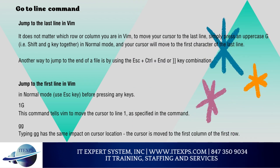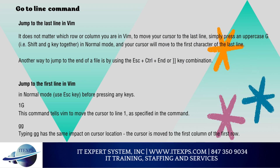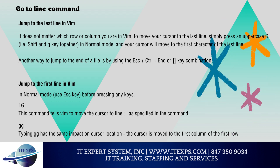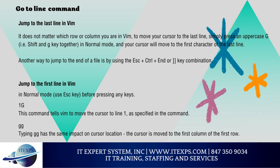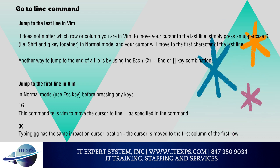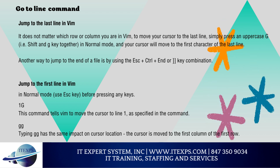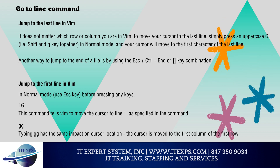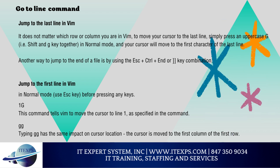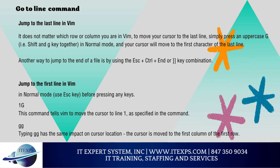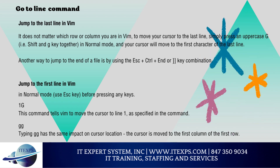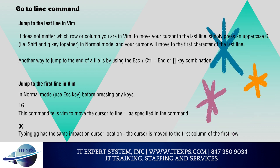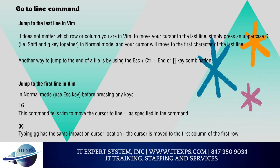Go to first line or last line: To move your cursor to the last line, press uppercase G in normal mode and the cursor will move to the first character of the last line. You can also use Escape + Ctrl + End. To jump to the first line, use 1g or gg — gg moves the cursor to the first column of the first row. You can also use Escape + Ctrl + Home to move to the first line.